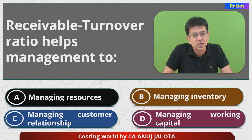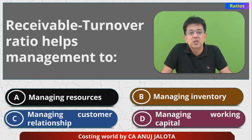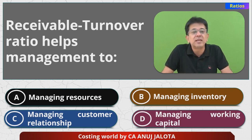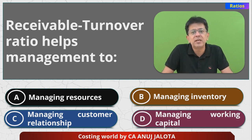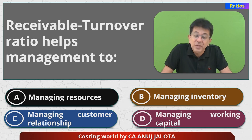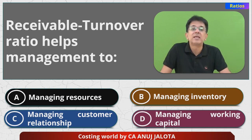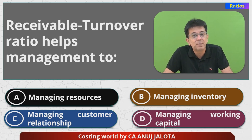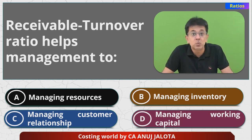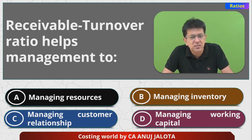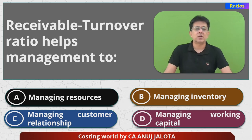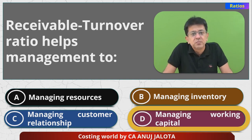But out of the four, if I have to select any one answer, it should be D — managing working capital. Debtors is part of your current asset, and current assets less current liabilities is working capital. So it helps you manage your working capital; it ensures that debtors get converted back into cash. Out of the four, my bet is on D — that's the most apt answer. Although in some way C can also be your answer, D seems to be the better answer. So D is the correct one.